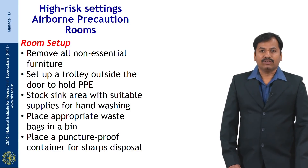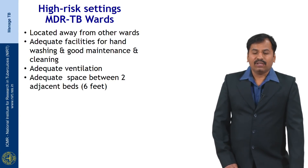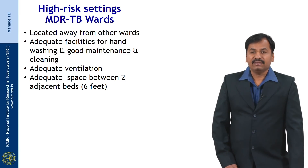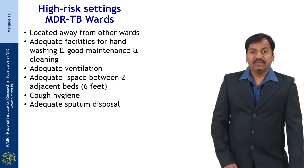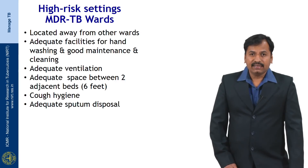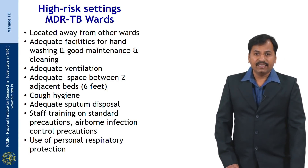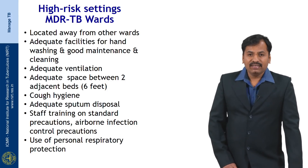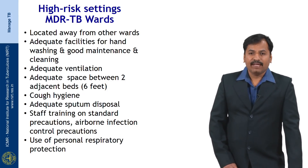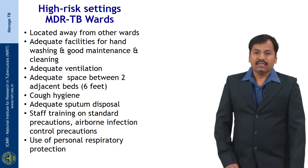Place a puncture-proof container for sharps disposal. In high risk settings like MDR wards, try to have the ward located away from other wards, with preferably adequate facilities for hand washing and good maintenance and cleaning. There should be adequate ventilation and adequate space between two adjacent beds of at least 6 feet. All patients in the ward should be taught about cough hygiene. All staff should be trained on standard precautions, airborne infection control precautions, and should be using personal respiratory protection materials.